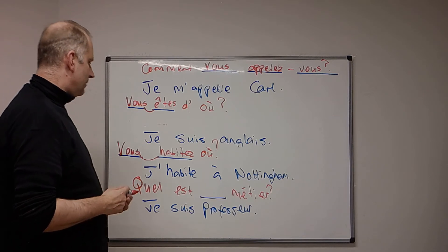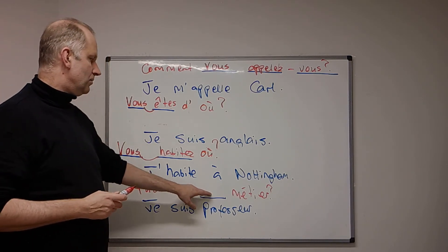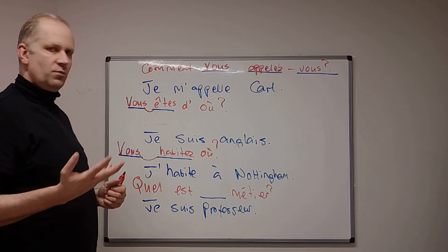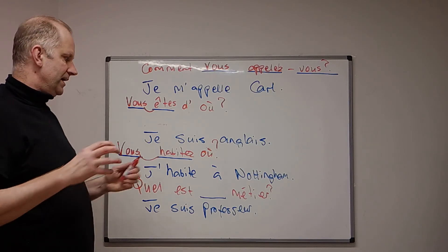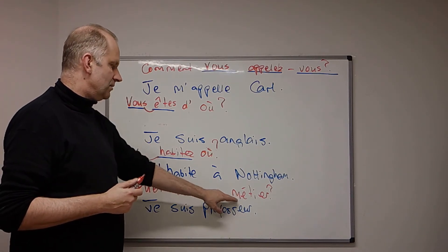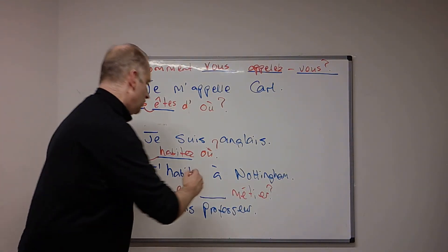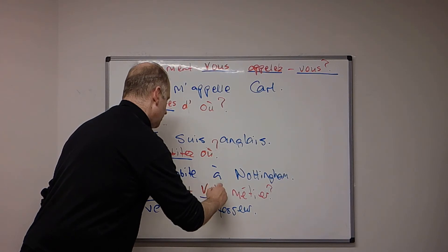And then, before we had quel est ton métier? Now, when we're using the tu forms of the verb, with métier, the word for your is ton, but when we're using the vous form, the word for your is votre.